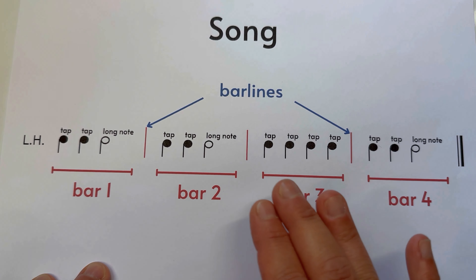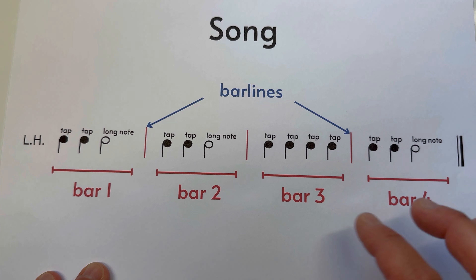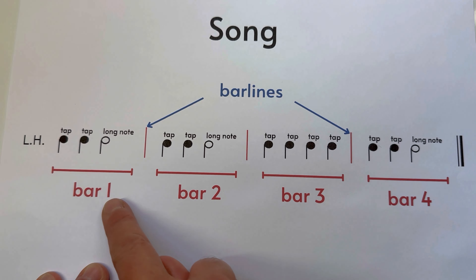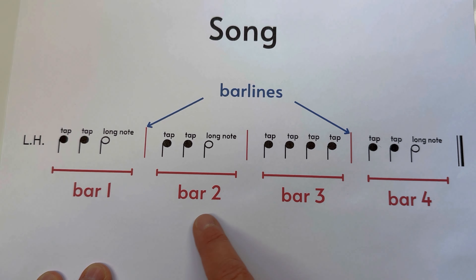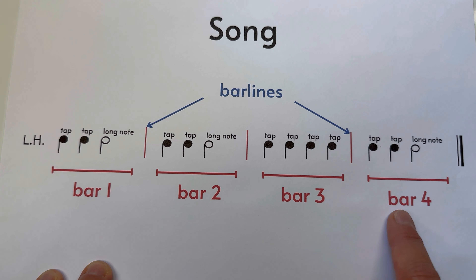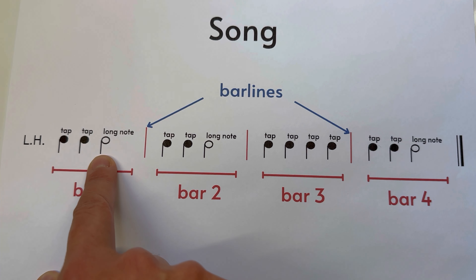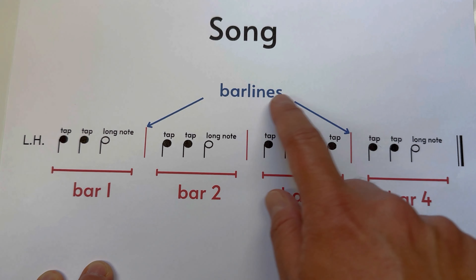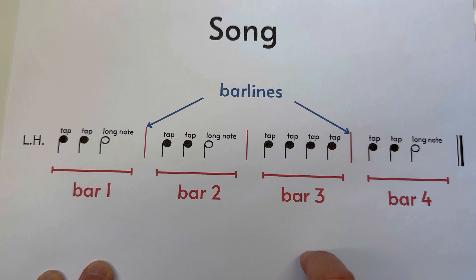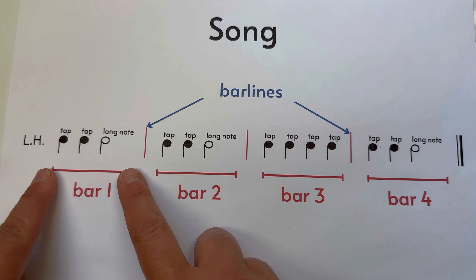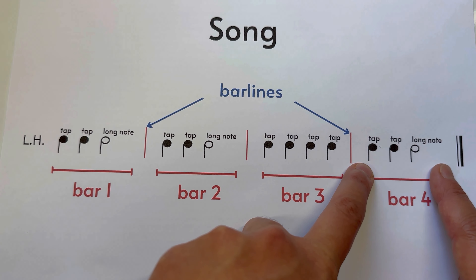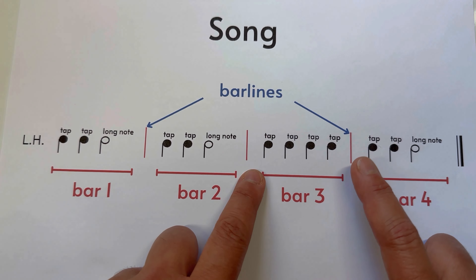As we look across at our song — the first march — you will see that in bar number one we have two children and one grown-up. Bar two: two children, one grown-up. Bar four: two children, one grown-up. So house one, two, four all have the same contents — two children and one grown-up. But house three, bar three, has four children. So you can think of bars as houses, and in each house there will be specific notes, with the bar lines acting as the fences that separate the houses.